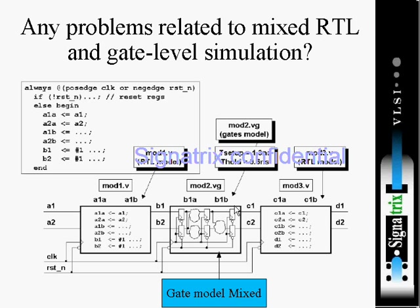Within one cycle, this flip-flop needs to process the data and give it to the RTL model — there is no problem. But if it takes more than one cycle, there is a problem in the design. This is the problem with the gate level design: it should process in one cycle but it is taking more than one cycle. So there is a problem in the gate level netlist with the hold time, and you have to fully redo the design because it is taking two cycles to process the data.